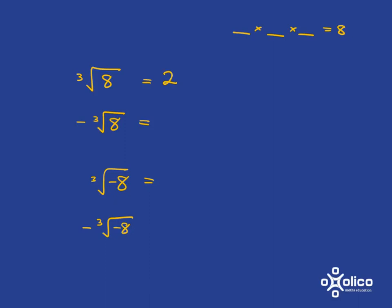In this next one, all I'm saying is I want the negative of that cube root. So I just want to take the cube root and then make it negative. The cube root I've just worked out is 2, and then I just need to make that negative. So the answer is negative 2.